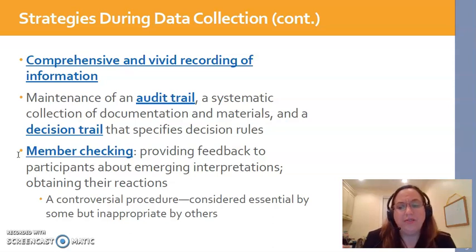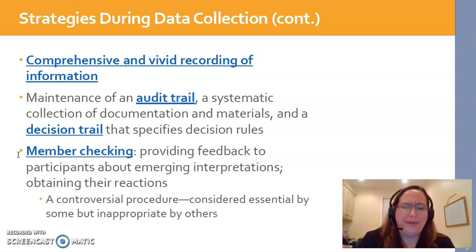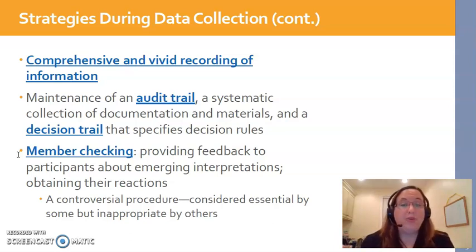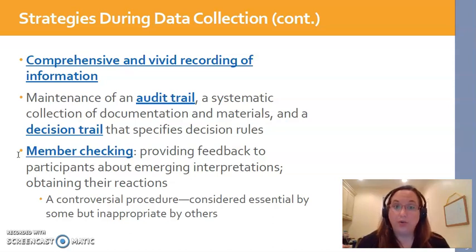For audit trails or decision trails, researchers keep a careful record of all the decisions they make — for example, why they decided to code certain statements as 'trying to fit in' versus 'reaching my maximum potential.' They need to keep all notes from all their meetings so that anyone should be able to go in, look at their paperwork, and understand that they were meticulous in the decisions made during data collection. When you're reading qualitative studies, you may see these things mentioned in the methods section, because researchers need to provide proof that they did a rigorous job of protecting the credibility and enhancing the trustworthiness of the data collected.